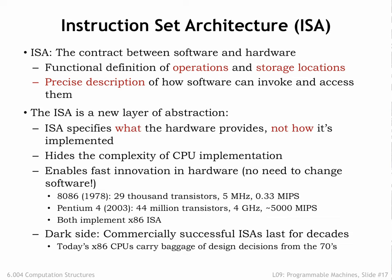But a word of caution is in order. It's tempting to make choices in the ISA that reflect the constraints of current technologies, e.g., the number of internal registers, the width of the operands, or the maximum size of main memory. But it will be hard to change the ISA when technology improves, since there's a powerful economic incentive to ensure that old software can run on new machines. A particular ISA can live for decades and span many generations of technology. If your ISA is successful, you'll have to live with any bad choices you made for a very long time.